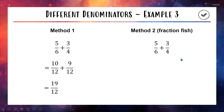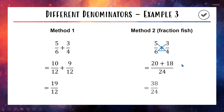Using the fraction fish: draw the fish shape with three lines. The face line gives 6 times 4 equals 24 on the bottom. Then 5 times 4 is 20 for the top left. With a plus, 6 times 3 is 18. So 20 plus 18 is 38, giving 38 out of 24. This differs from our earlier 19 out of 12, but when we cut both top and bottom in half — half of 38 is 19 and half of 24 is 12 — we get the same answer. When using the fraction fish, you may need to simplify your final answer.